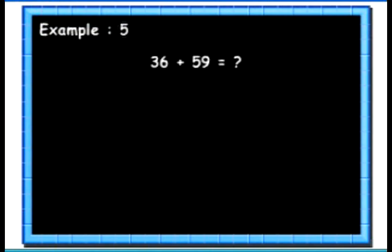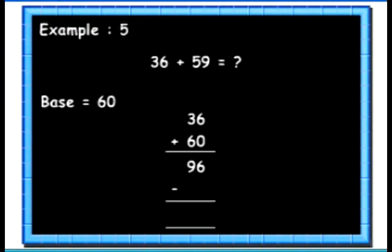Let's see another example. Here we will add 36 and 59. To add 59 to 36 we will take the base as 60. 36 plus 60 gives us 96. Then we will subtract 60's complement of 59 from this 96. 60's complement of 59 is 60 minus 59, that is 1. 96 minus 1 gives us 95.